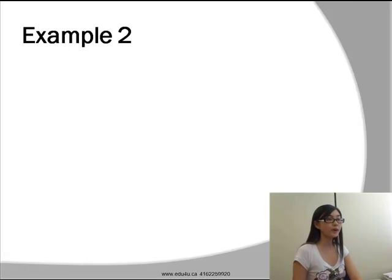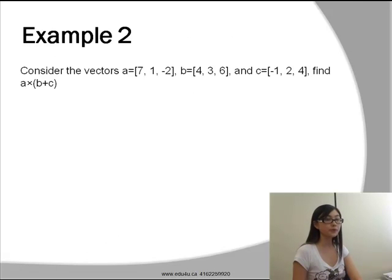Now let's take a look at example two. Consider the vectors A equals 7, 1, -2, B equals 4, 3, 6, and C is -1, 2, 4. Find A cross (B plus C) in brackets.